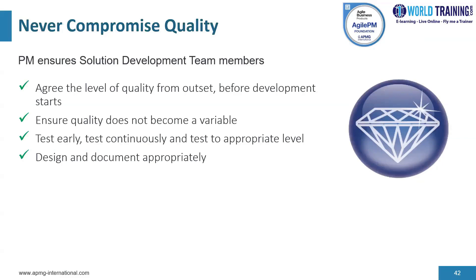The next principle is never compromise quality. Referring back to the project variables slide, in DSDM quality is not negotiable, and this principle reinforces that message. Initial quality expectations are usually based on corporate standards, project-level standards such as non-functional requirements, and requirement-level standards such as specific acceptance criteria. All of these help ensure quality is not adjusted when problems arise. The DSDM answer is to drop a requirement rather than lower the expected standard.